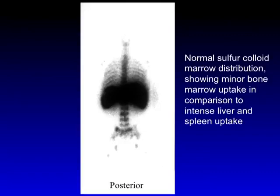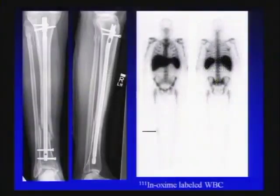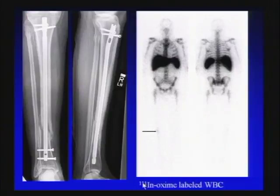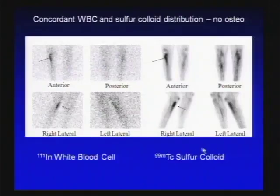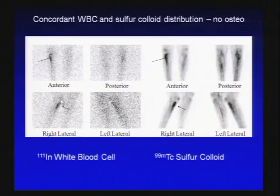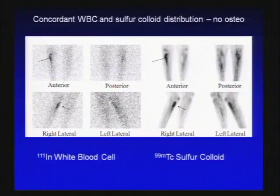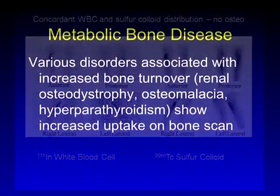Here's a reminder of the sulfur colloid red marrow distribution. On a white cell scan, we've got tib-fib fractures and an endoprosthesis with pain and fevers — question of infection. There's an abnormality with a lot of uptake in the proximal tibia, which is not where the fracture was, so we might think that's probably infection. But the sulfur colloid — done as a simultaneous dual acquisition — shows marrow expansion from the endoprosthesis. So there's nothing unexpected: that's a matching abnormality, which is fine. That's how you use white cell imaging — a matching abnormality is marrow; a discordant one suggests infection.